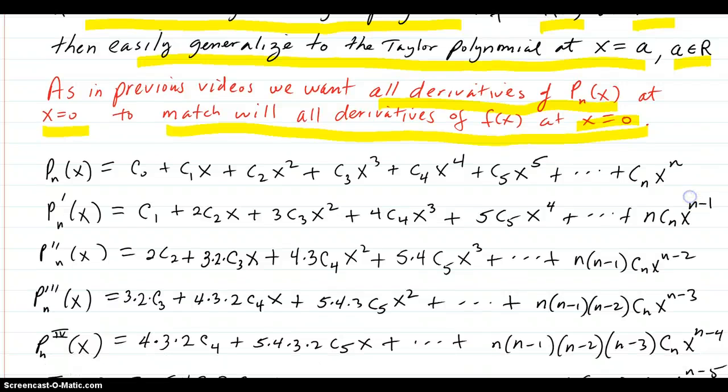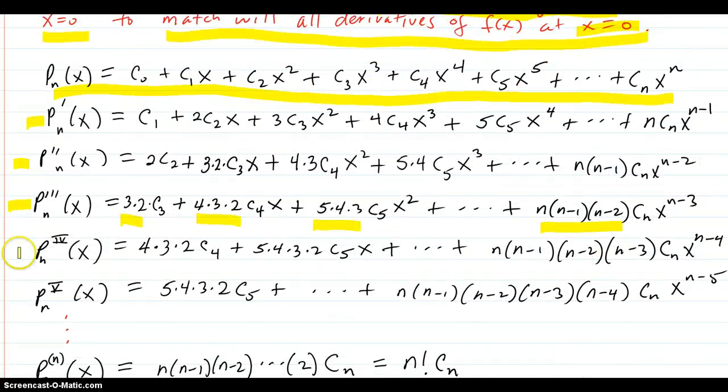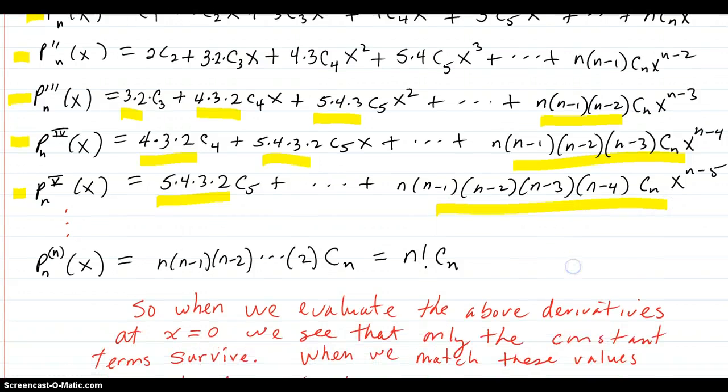So here is your Taylor polynomial, all written out about x equals zero. Your first derivative, second derivative, third derivative. Notice how, as in previous videos, these factorials are piling up. Then you get the fourth derivative here, you can see those piling up in front of the coefficients. Fifth derivative, you can see this. So the nth derivative is going to be n factorial times C_n.